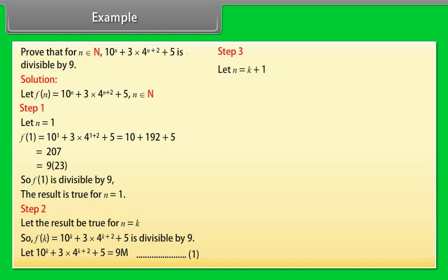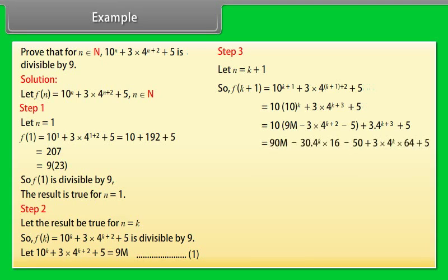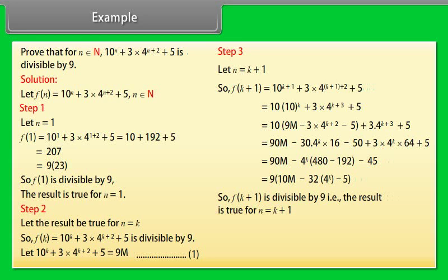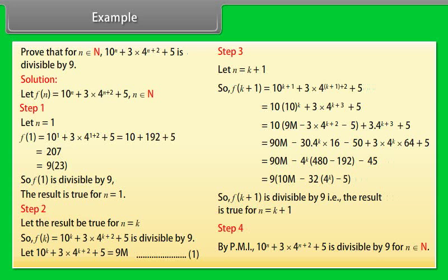Step 3: Let n = k + 1. So f(k+1) = 10^(k+1) + 3·4^(k+3) + 5. By calculating, we get f(k+1) = 9(10m − 32·4^k − 5). So f(k+1) is divisible by 9, that is, the result is true for n = k + 1. Step 4: By the principle of mathematical induction, 10ⁿ + 3·4^(n+2) + 5 is divisible by 9 for all n belonging to N.